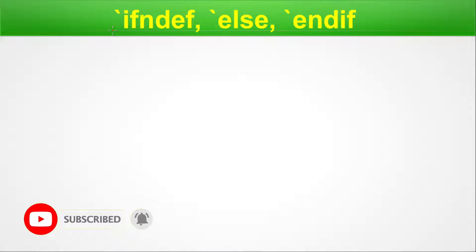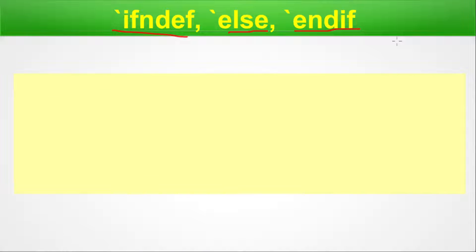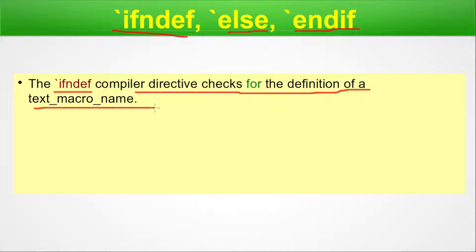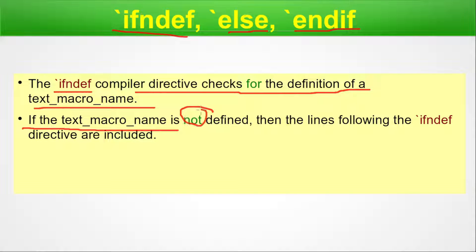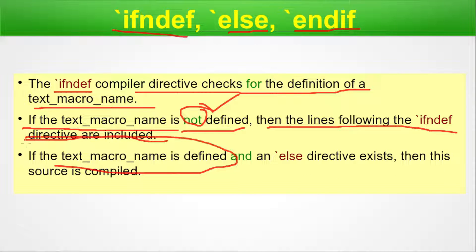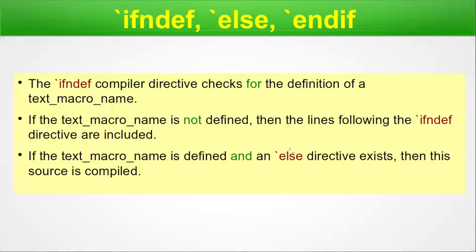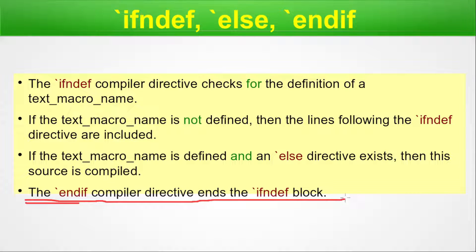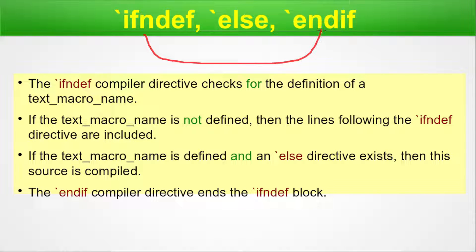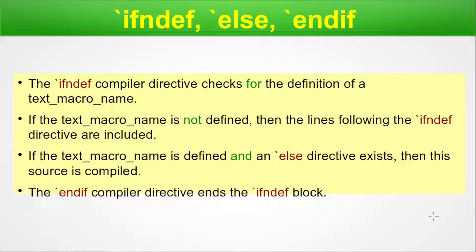For ifnotdef, else, and endif: the ifnotdef compiler directive checks for the definition of a text macro name, but checks the opposite condition from ifdef. If the text macro name is not defined, the lines following the ifnotdef directive are included. If the text macro name is defined and an else directive exists, then that else source is compiled. So ifnotdef and endif are paired with else existing in between, similar to the ifdef structure.